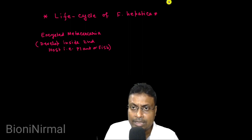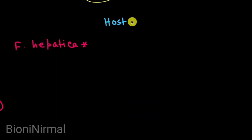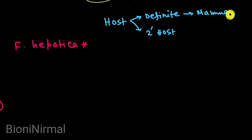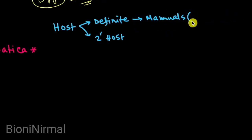The life cycle involves two types of hosts: the definitive host and the intermediate host. The definitive host is the primary host, and it is mammals — different types of mammals like goat, sheep, rat, dog, and including humans. This is the definitive host because it contains the sexual stage.